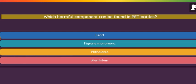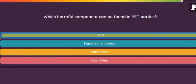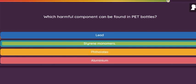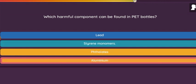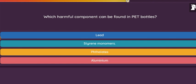Question: Which harmful component can be found in PET bottles? Option 1: Lead. Option 2: Styrene monomers. Option 3: Phthalate. Option 4: Aluminum.